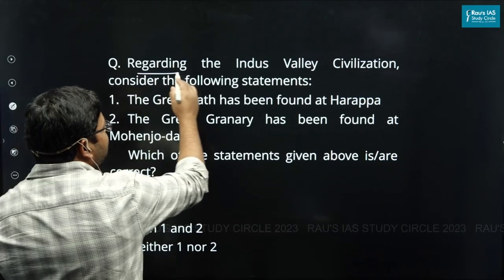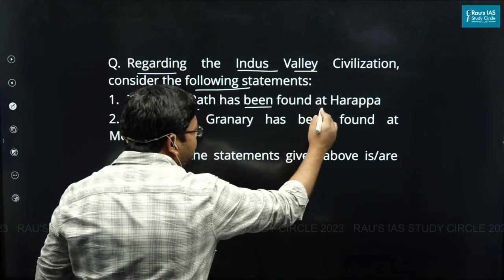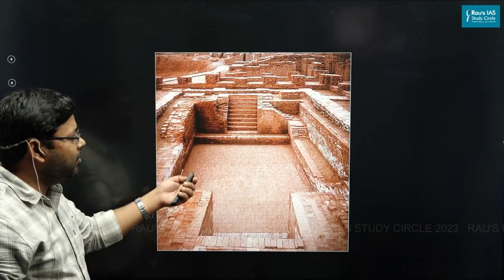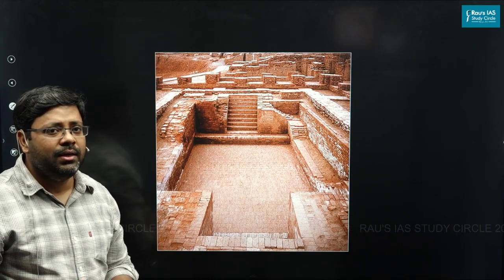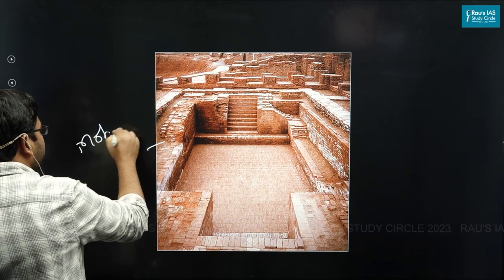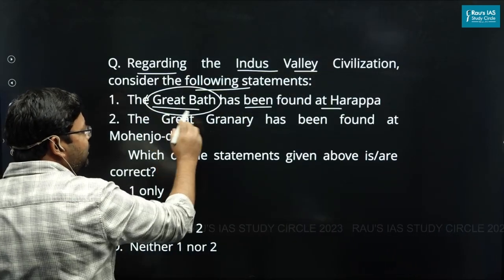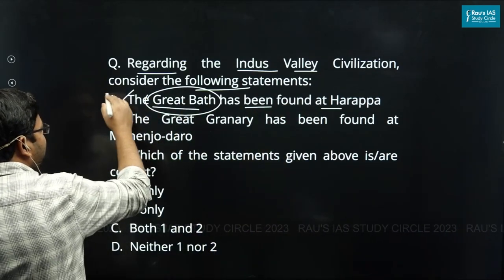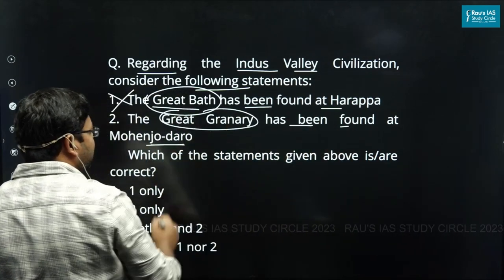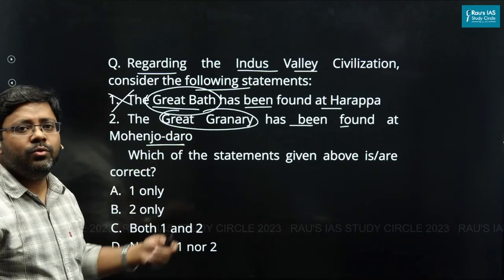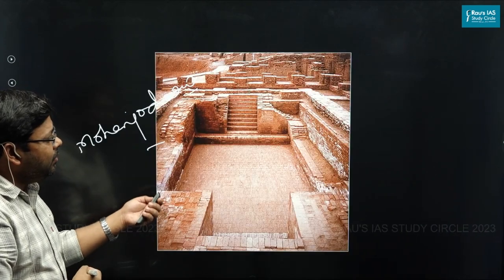The next question considers statements about the Indus Valley Civilization. The first statement says the Great Bath was found at Harappa — this is wrong. The Great Bath is an architectural marvel of IVC, used for ritual bathing, and it was found at Mohenjo-daro, not Harappa. The second statement says the Great Granary was found at Mohenjo-daro — this is correct. Both the Great Bath and Great Granary were found at Mohenjo-daro.